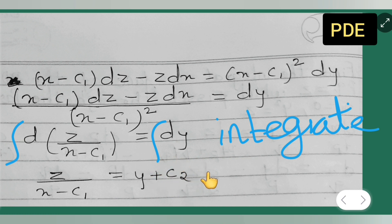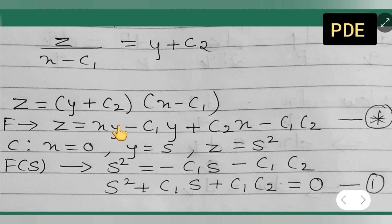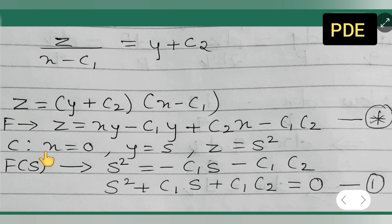So z/(x − c1) = y + c2, which gives z = (y + c2)(x − c1). Expanding: z = xy − c1·y + c2·x − c1·c2. Take this as equation (★). Now apply the initial conditions: x = 0, y² = z. Parametrize as y = s, z = s².